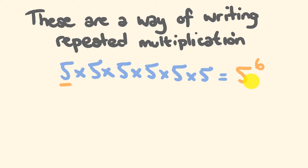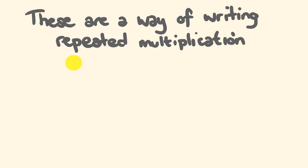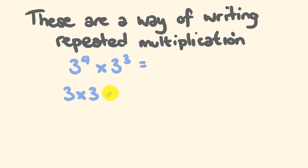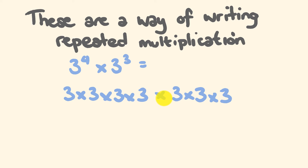Pretty simple, right? Let's look at a couple of further examples. A bit harder now — say we have 3 to the power of 4 multiplied by 3 to the power of 3. What is this equal to? Well, 3 to the power of 4 is 3 times 3 times 3 times 3, and we're multiplying by 3 to the power of 3, which is 3 times 3 times 3. We're multiplying these two sets together, so the base is 3 and we count: 1, 2, 3, 4, 5, 6, 7 — this is 3 to the power of 7. You might notice a shortcut here: we could just add the exponents, 4 plus 3.